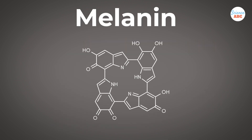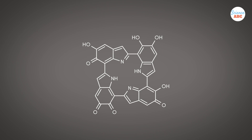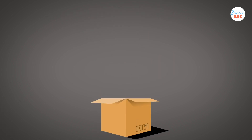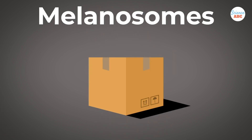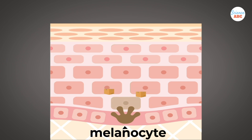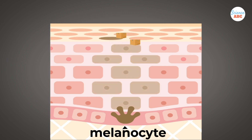The melanocytes make the pigment, which is then packed into small packets of pigment called melanosomes. These pigment packets are transported to skin cells, the keratinocytes, where the color of the pigment shows up.